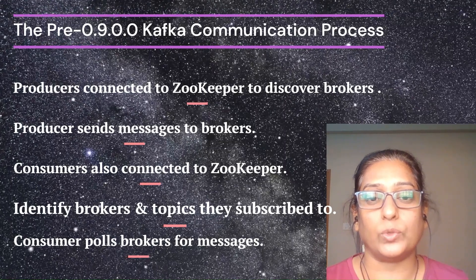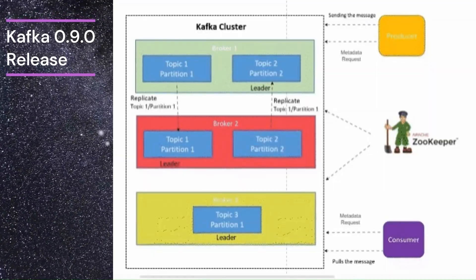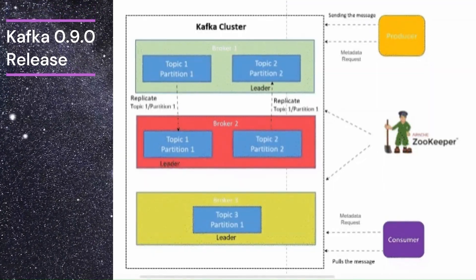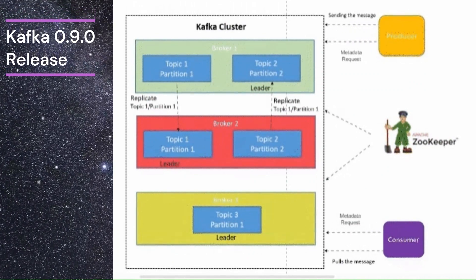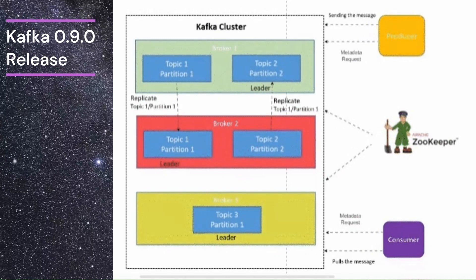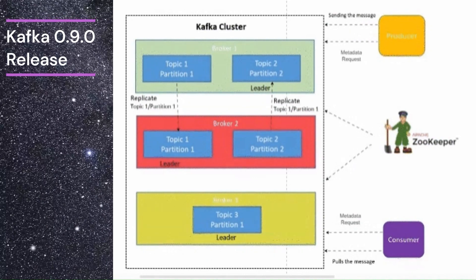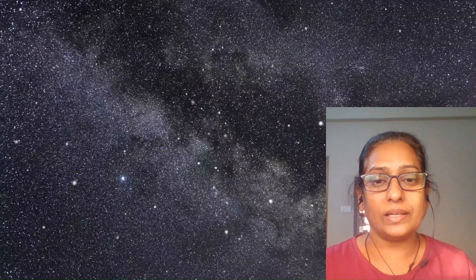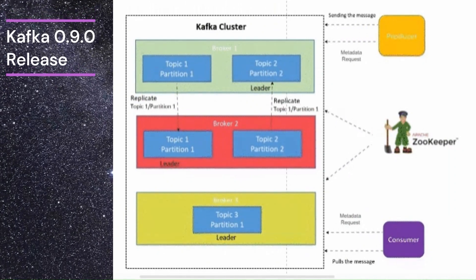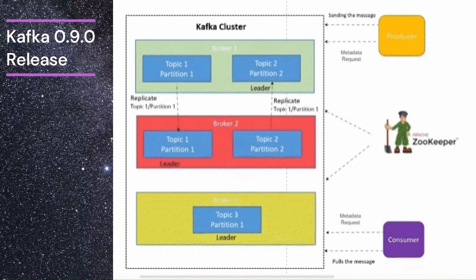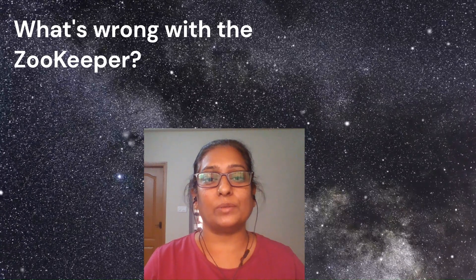With the release of Kafka 0.9.0, a significant shift occurred. While ZooKeeper continued to manage the metadata mostly for backward compatibility, it was no longer required for producers and consumers to communicate with brokers through ZooKeeper. Producers and consumers can now directly communicate with the brokers, as the metadata is cached in all the Kafka brokers. The consumer offset is also now available within the Kafka brokers designated as offset managers.